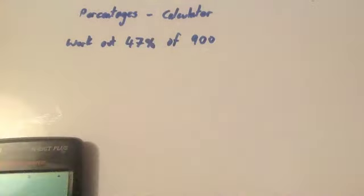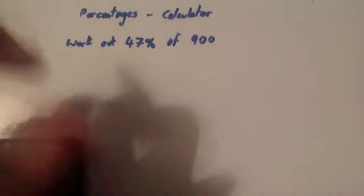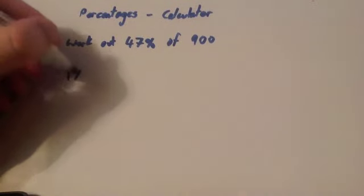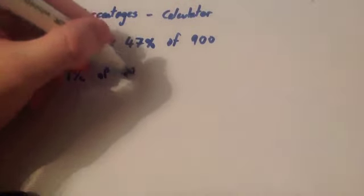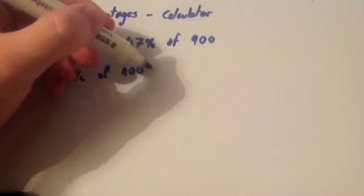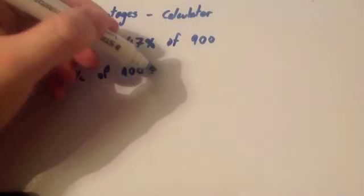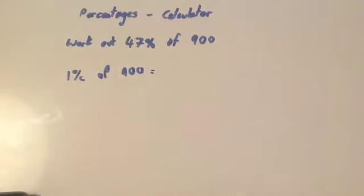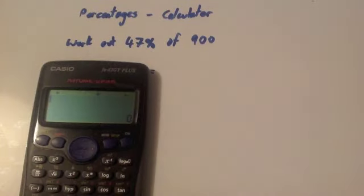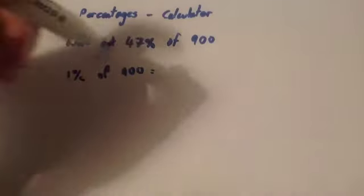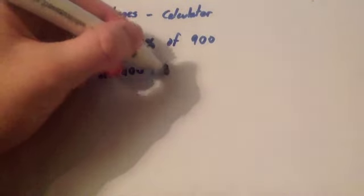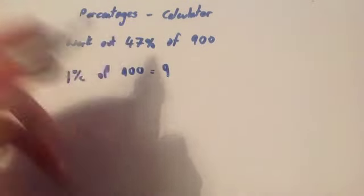If I wanted to work out 1% of 900, I would take my number and divide it by 100. So I'm going to do 900 divided by 100. You can just do it in your calculator, 900 divided by 100. Well actually, you should just know that answer is going to be 9. Then you're going to times it by the percent you want.